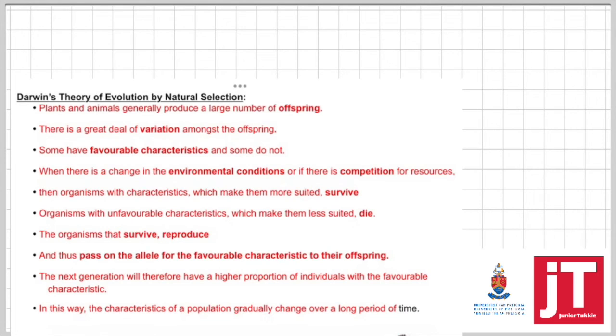This is Darwin's theory of natural selection. You need to know this very well. Plants and animals generally produce a large number of offspring. There is a great deal of variation amongst the offspring. Some have favorable characteristics, some do not. When there is a change in the environmental conditions, there is competition for resources. Then organisms with characteristics which make them more suited survive. Organisms with unfavorable characteristics will make them less suited; they will die.